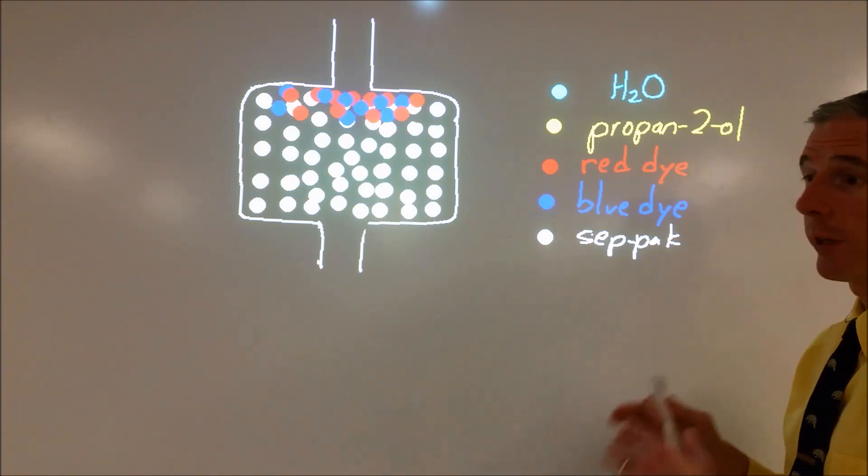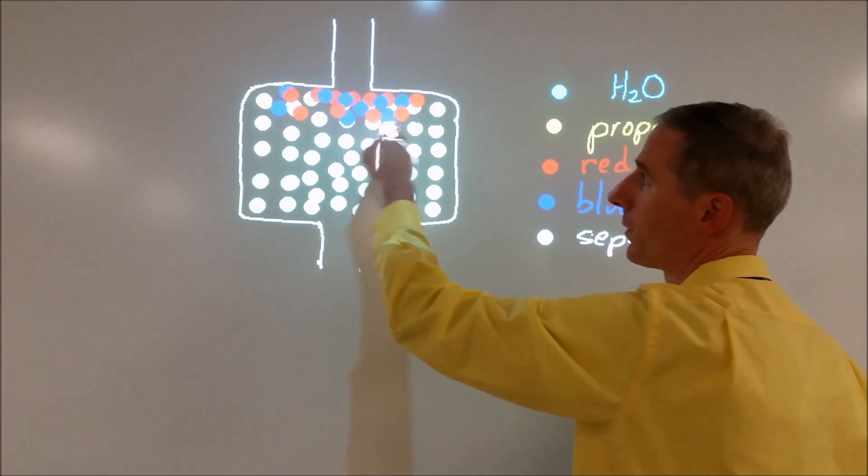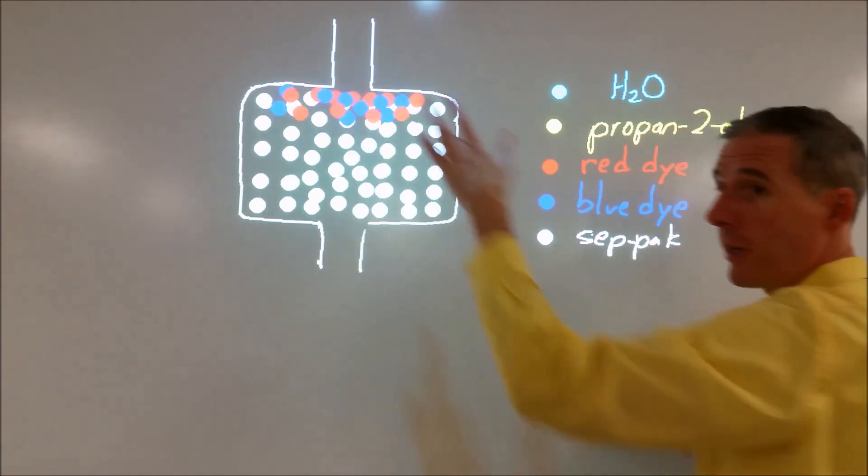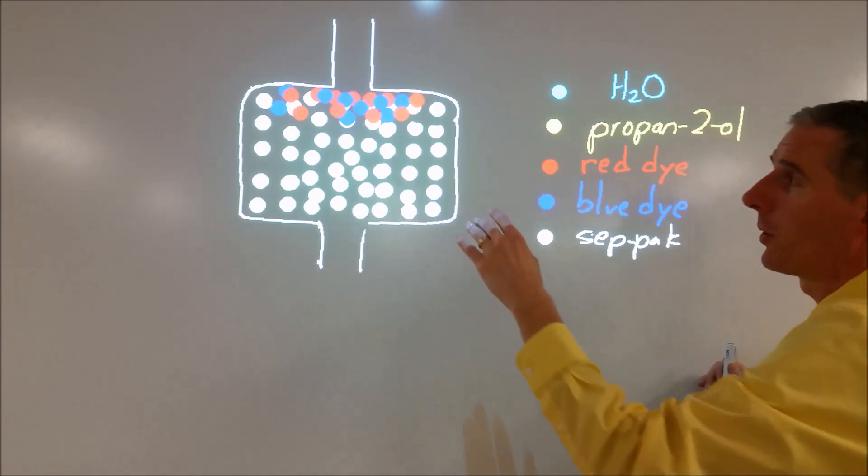When we're doing chromatography, it can really help to look at a particle level what's going on. Grape Kool-Aid is composed of two different dyes, the blue and the red. But when mixed, that appears to our eyes purple. So we would perceive this to be purple when they're mixed.